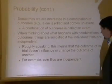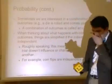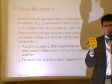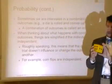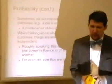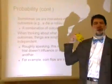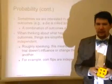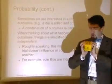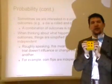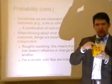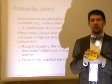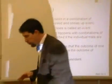This is similar to independence in probability — does one outcome influence the other? The probability of rolling a four on a die is 1 out of 6. If I roll the die again, regardless of what happened the first time, the probability of getting a four on the second roll is still 1 out of 6. That means the two rolls are independent of each other — the second roll is not influenced by the first.